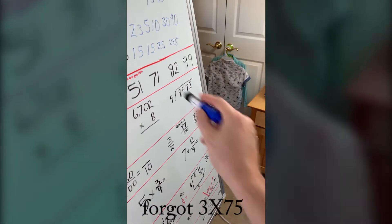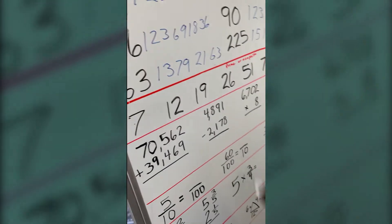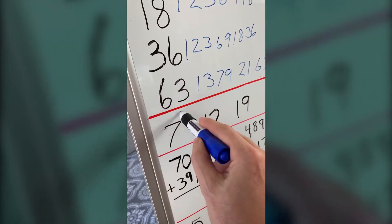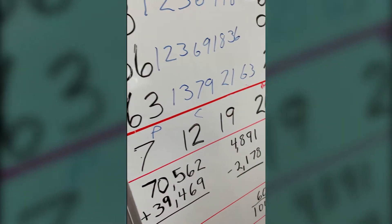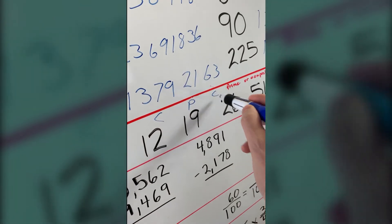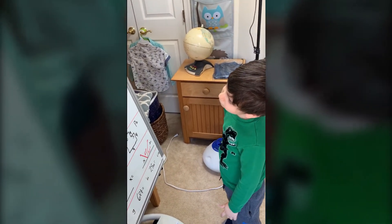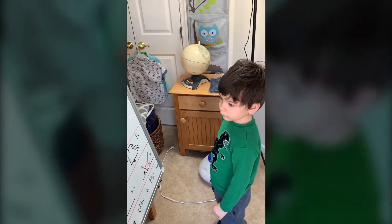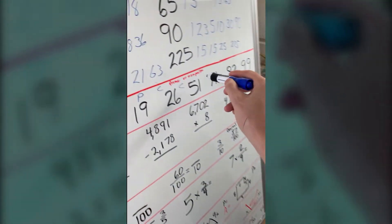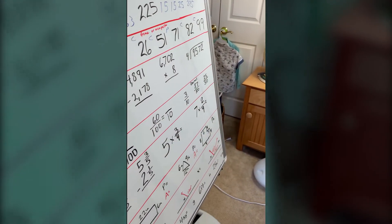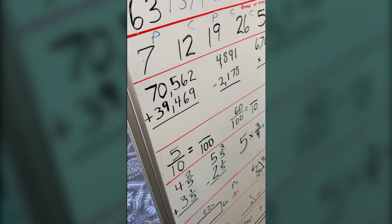Okay, so this is whether they're prime numbers or composite numbers. So: prime, prime, okay, composite, okay, maybe like prime, composite... composite, composite, composite. So it's composite, not composite.